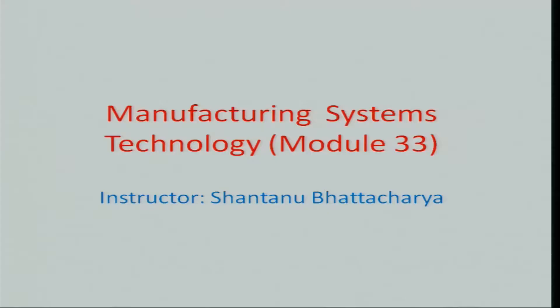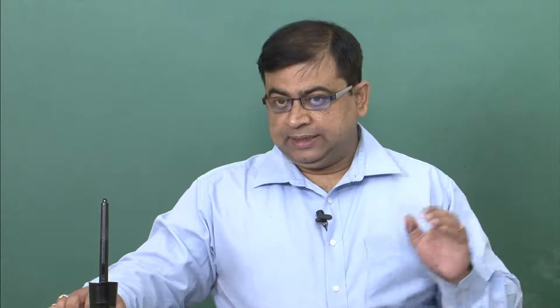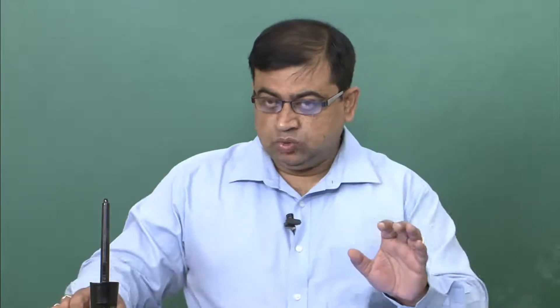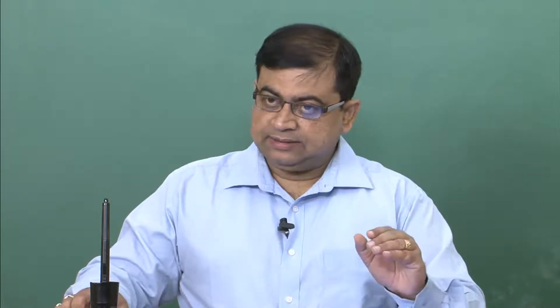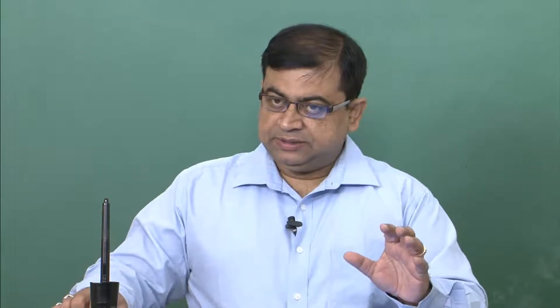Hello and welcome to this manufacturing systems technology module 33. We were talking about the different directions used in nomenclature for NC machining. I had just given you an exercise on how to figure out the Z motion in a rotating workpiece system or a rotating tool system. We had considered two operations: one is the face milling operation, another is the normal lathe-based turning operation.